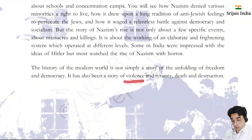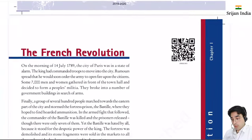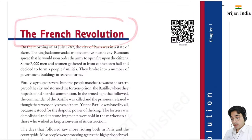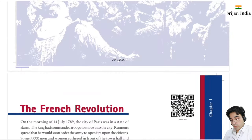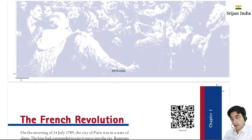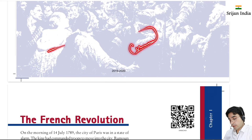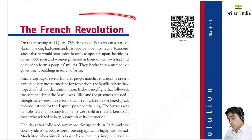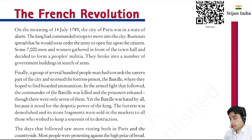The history of the modern world is not simply a story of the unfolding of freedom and democracy - it has also been a story of violence, tyranny, death and destruction. Now let us start with the French Revolution. This is the class 9 book. One more thing - many students of ninth class are watching this video, so let's be very civilized here as children are also watching.